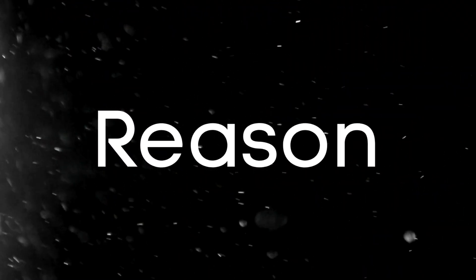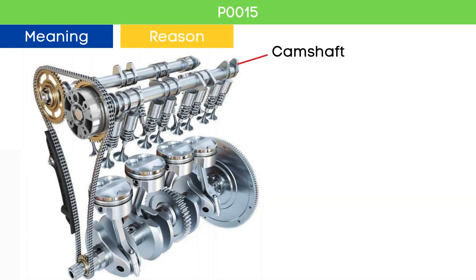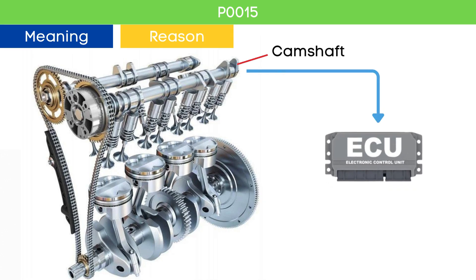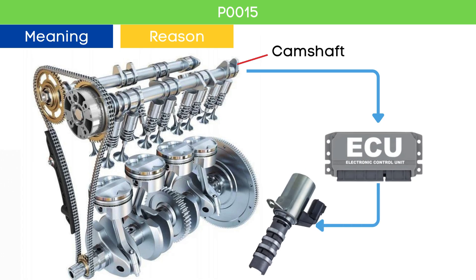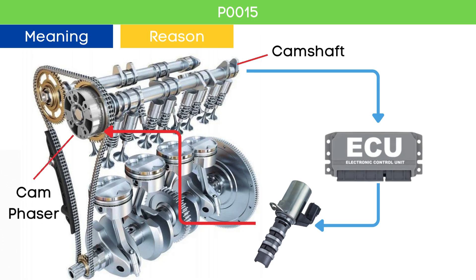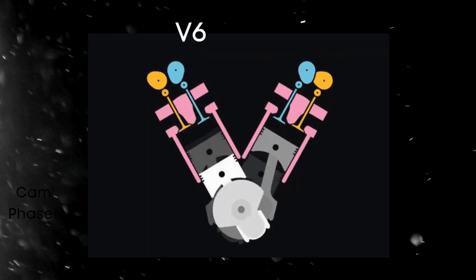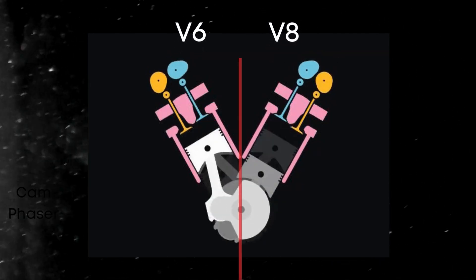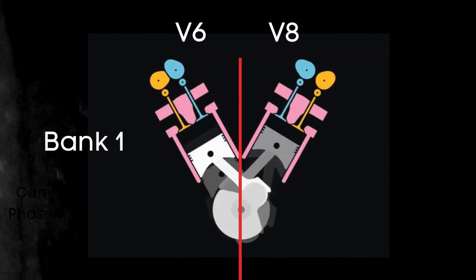Now let's learn why P0015 was triggered. The camshaft position sensor measures the position of the camshaft and sends this signal to the ECU. The ECU then sends a pulse command to the variable valve timing, or VVT solenoid, to advance or delay the cam position based on the engine load and speed. The VVT solenoid adjusts the cam phaser accordingly. In the case of V6 or V8 engines, there are two camshafts.